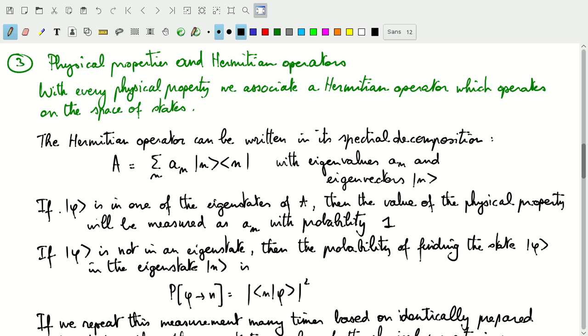So, if now phi, or state that we're measuring, is one of the eigenstates, then the value of the physical property will be measured as that eigenvalue with a probability of 1 or with 100% of the time.